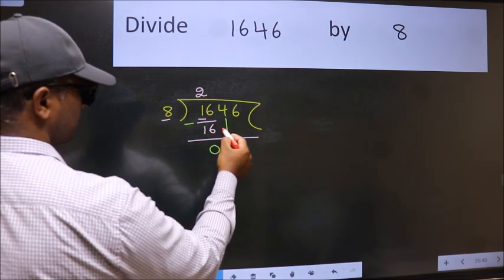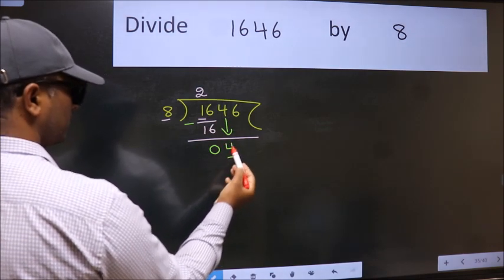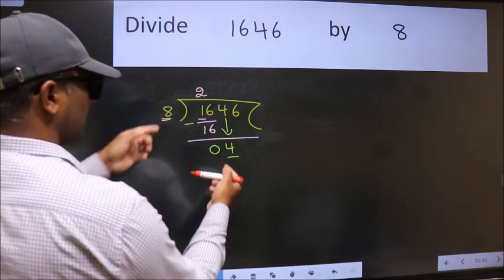After this, bring down the beside number. So, 4 down. Now, here we have 4 and here 8. 4 is smaller than 8, so